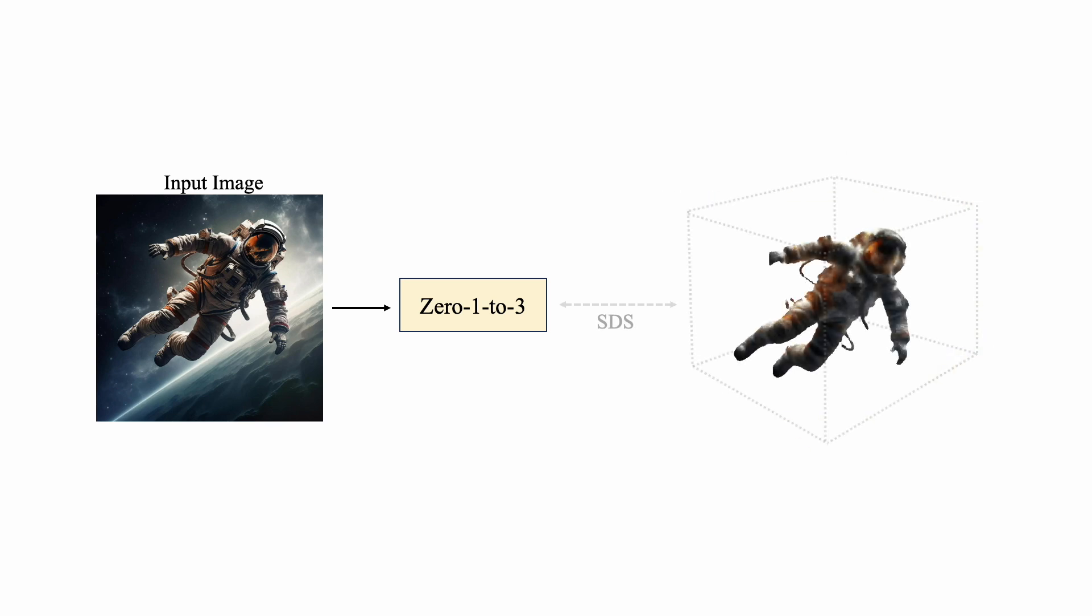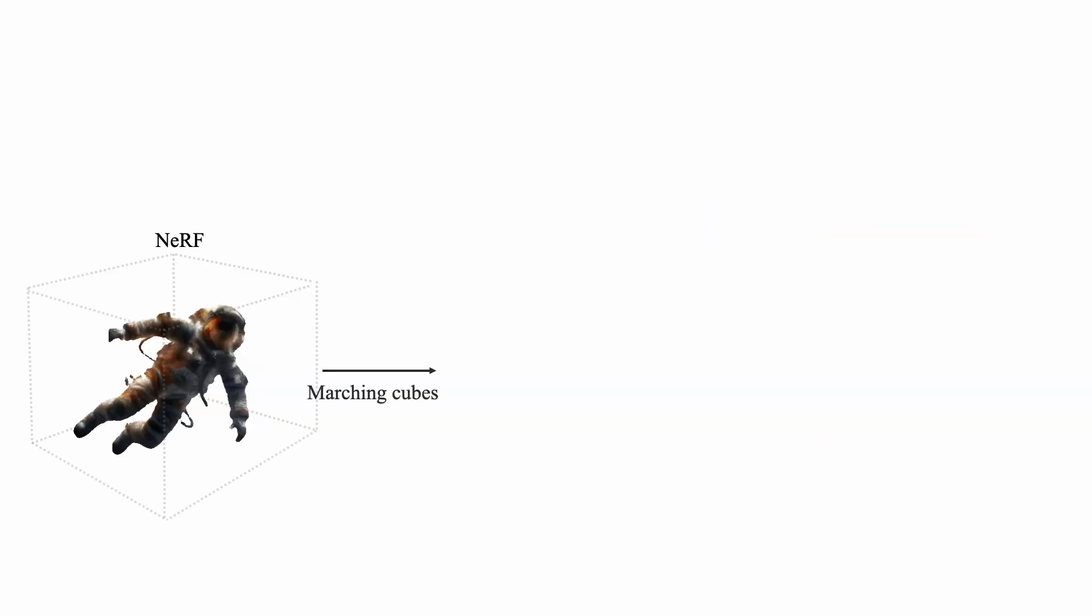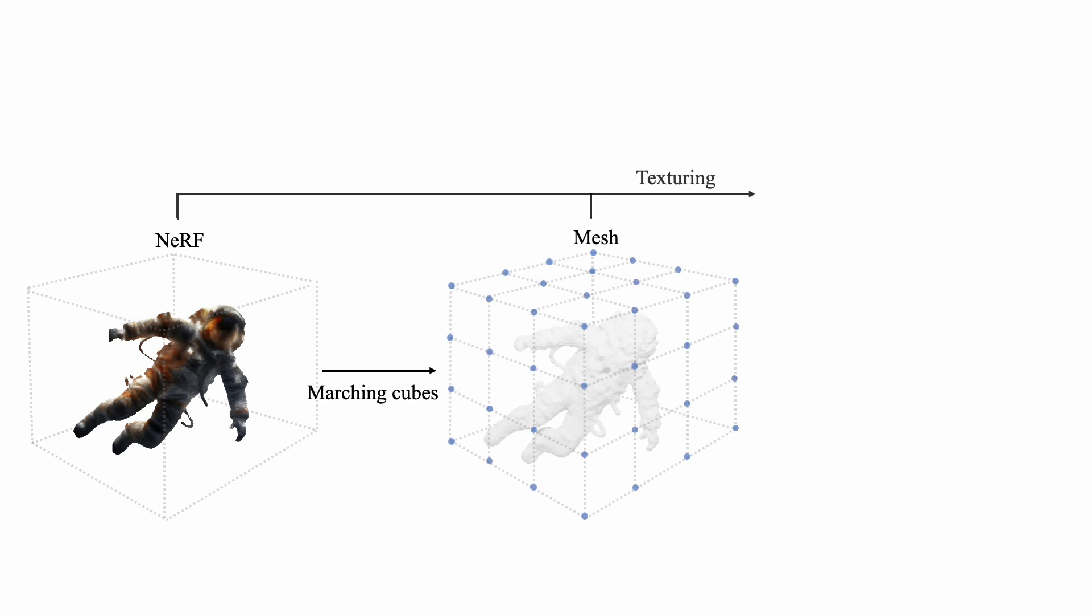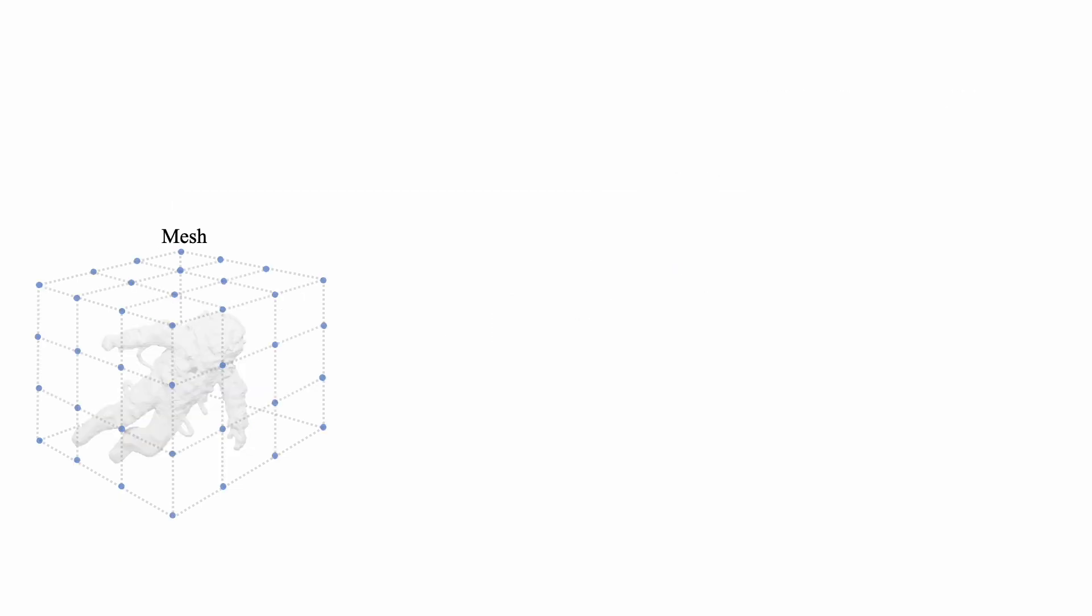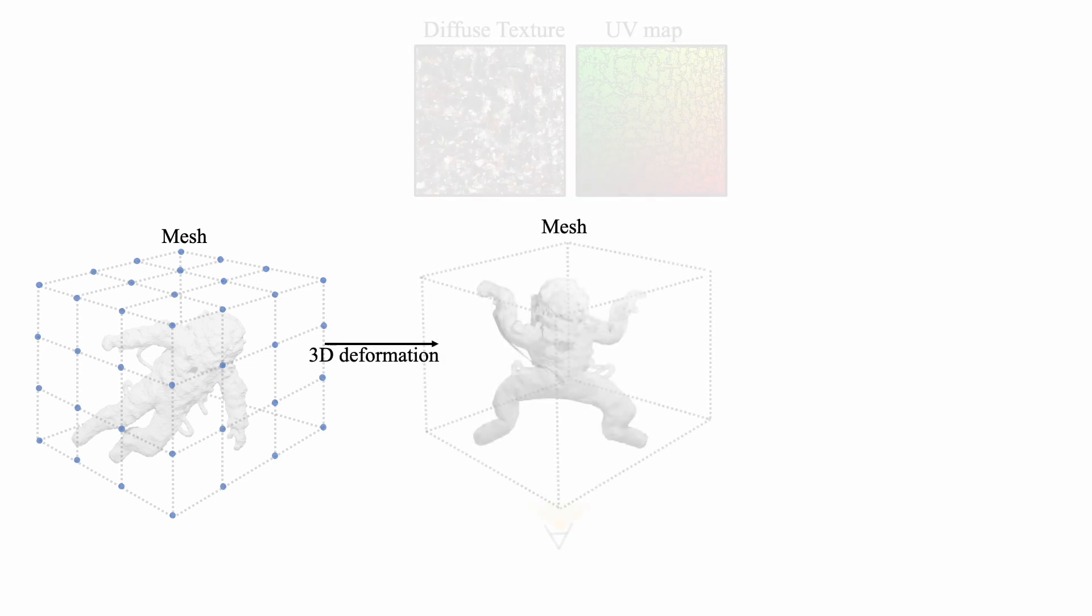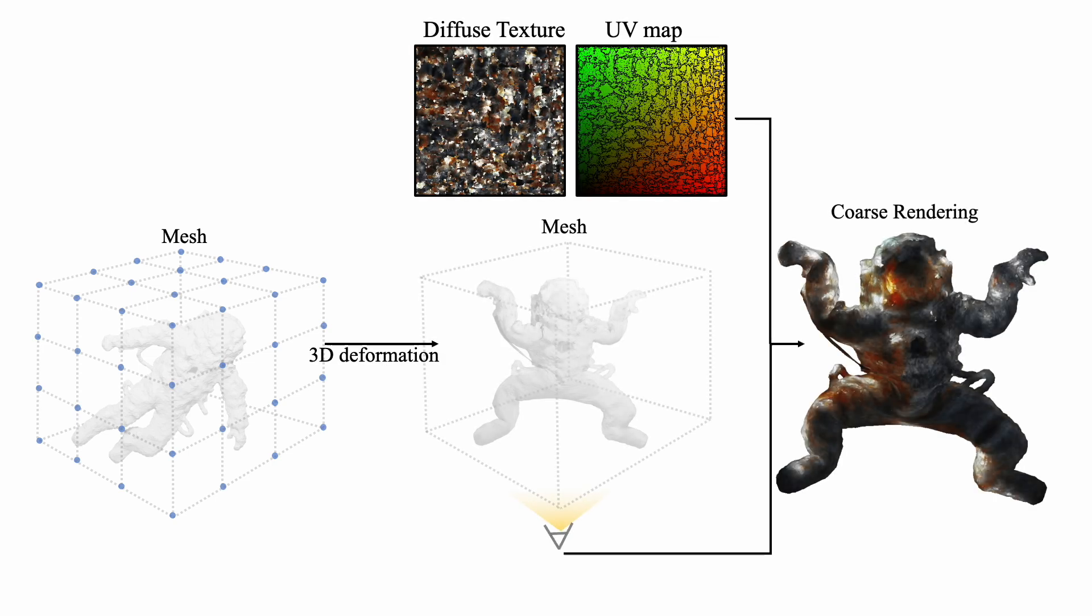Our pipeline begins with segmenting the selected object from the input image using SAM. Next, we use Zero-1-to-3 to train a NeRF model. Following this, the NeRF volume is transformed into a mesh along with its texture. With this mesh, we can edit the pose using 3D deformation and render it back into image space. However, this rendered image is coarse, so we pass it through an image translation pipeline to refine the rendering into a high-quality output.